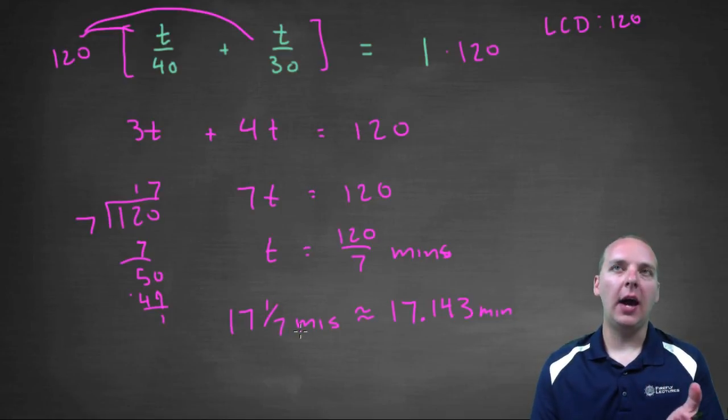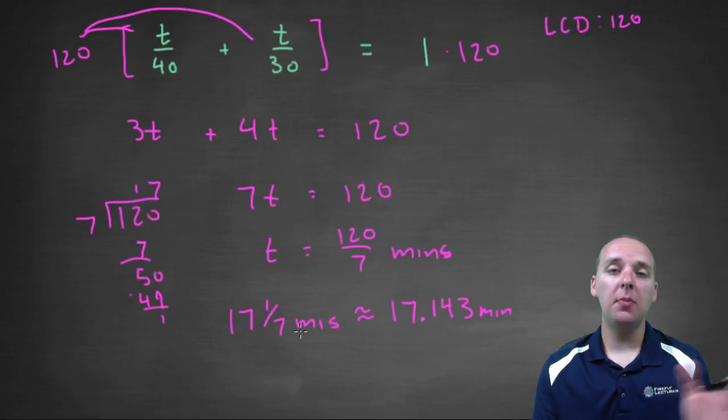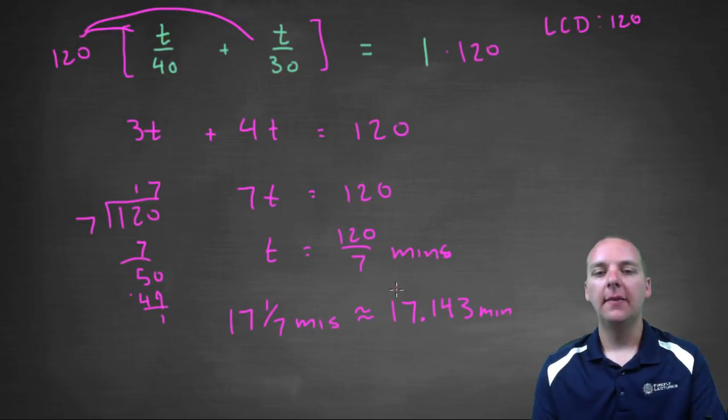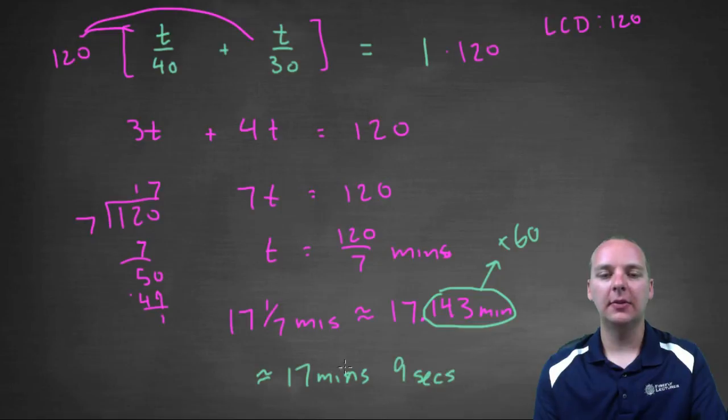Depending on how your instructor likes the answer displayed, some might be okay with 17.143 minutes. Most people don't say .143 minutes. Most people say this many minutes and this many seconds. So to get that, what you could do is you could take the .143 and multiply by 60, just the decimal part, because there's 60 seconds in a minute. And this turns out to be 17 minutes and about 9 seconds, okay.